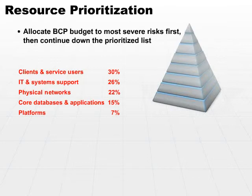At some point, we're probably going to run out of budget and we're going to have to say: we can ensure the top six business processes are going to continue, and anything after that is beyond our budgetary concerns.